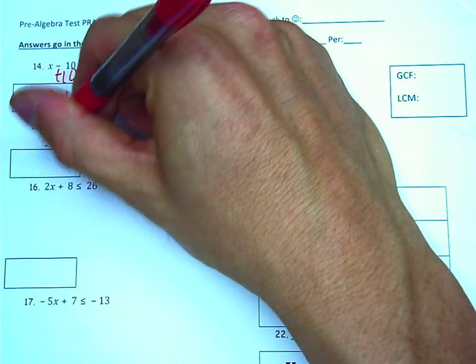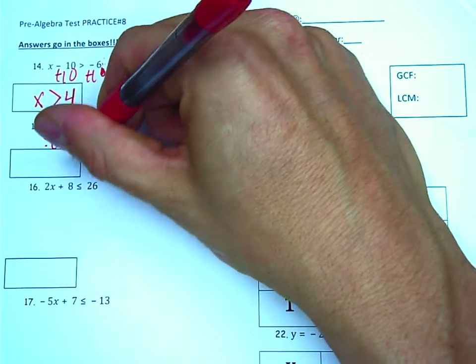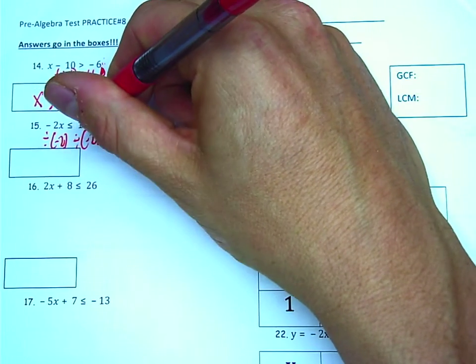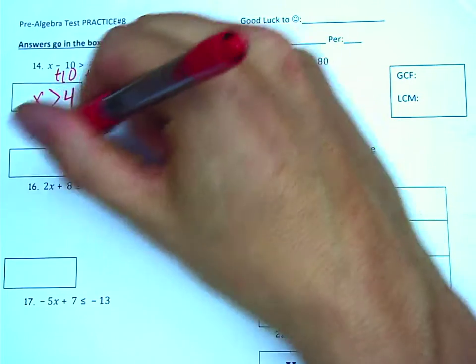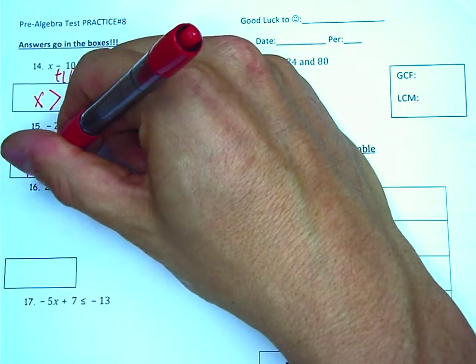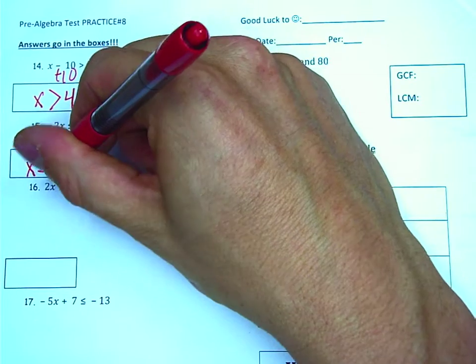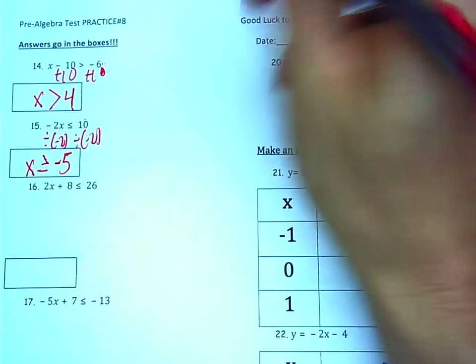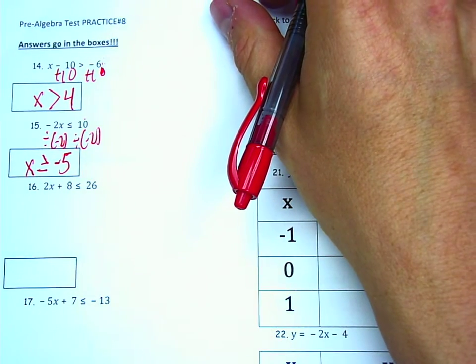Question 15. We're going to divide by negative 2. 10 divided by negative 2 is negative 5. Now that will flip the sign around, it'll become a greater than symbol because it's dividing by negative.